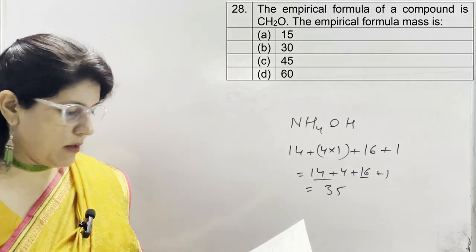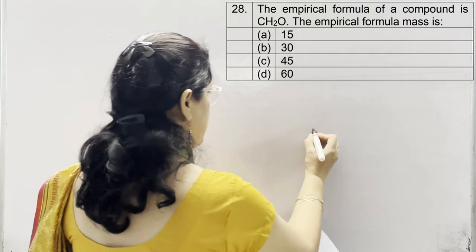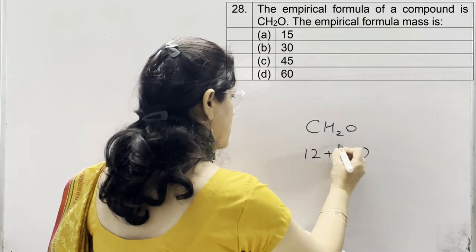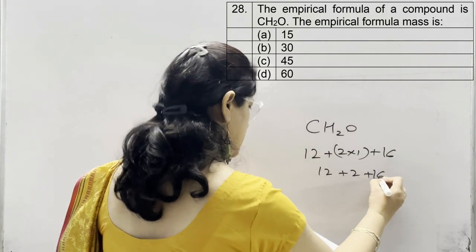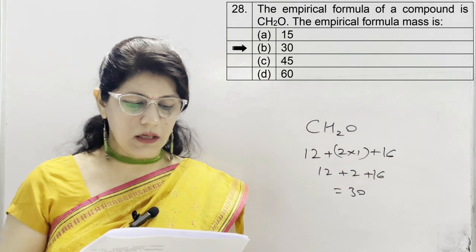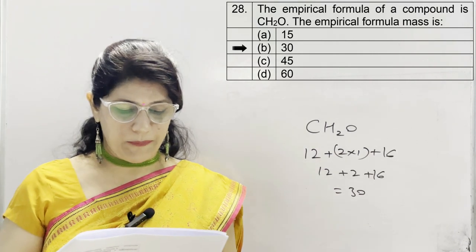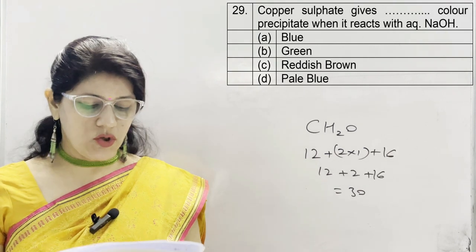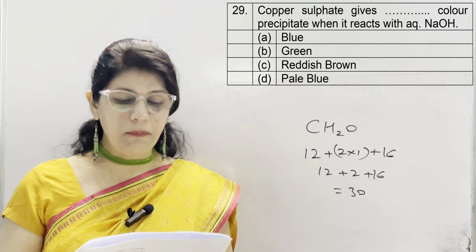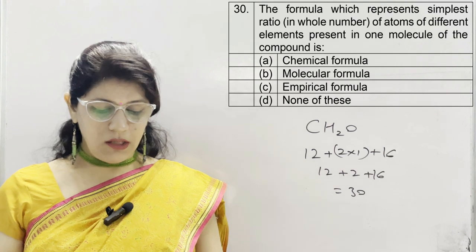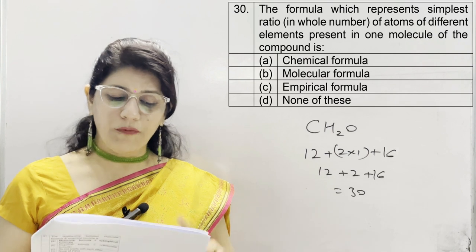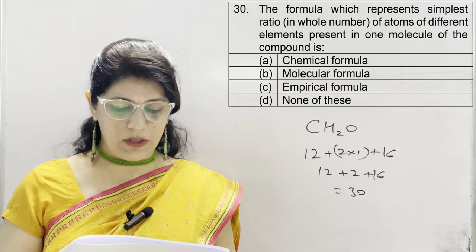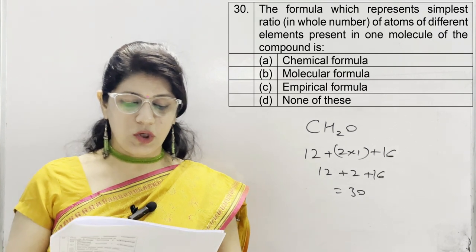Question 28: the empirical formula of a compound is CH₂O. Find the empirical formula mass. Carbon 12 + hydrogen 2×1 = 2 + oxygen 16 = 30. Options: A 15, B 30, C 45, D 60 — option B, 30, is correct. Question 29: copper sulfate gives dash color precipitate when reacting with NaOH. Options: A blue, B green, C reddish brown, D pale blue. Correct answer is D, pale blue. Question 30: the formula representing the simplest ratio in whole numbers of atoms present in one molecule is: A chemical formula, B molecular formula, C empirical formula, D none. Correct option is C, empirical formula.